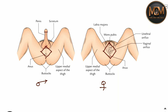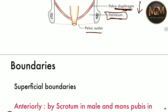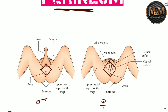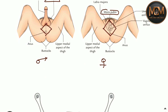Now let's look at the boundaries of the perineum — there are superficial as well as deep boundaries. Starting with the anterior boundary: anteriorly, in the male you can see the scrotum is present, while in the female you can see the mons pubis present anteriorly.